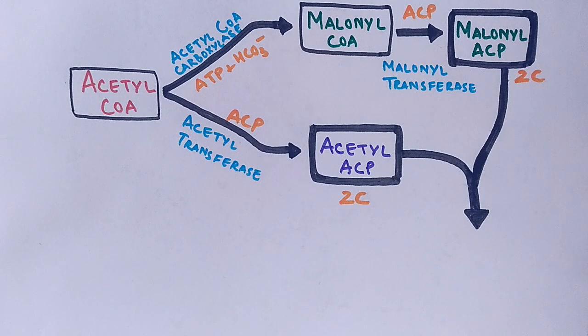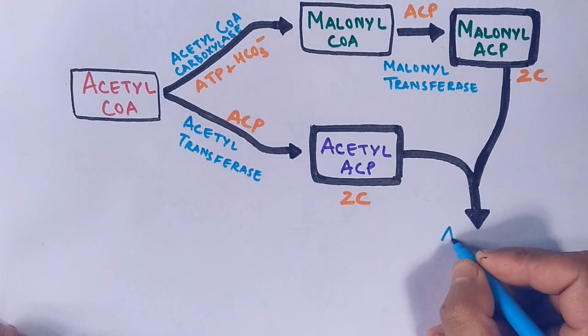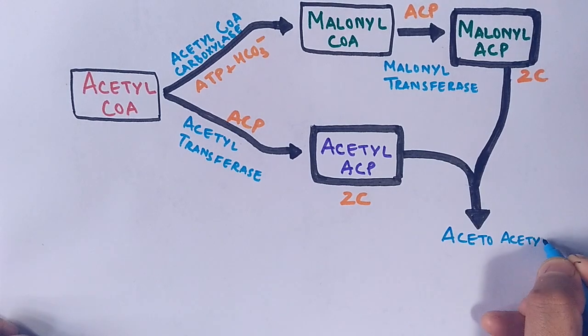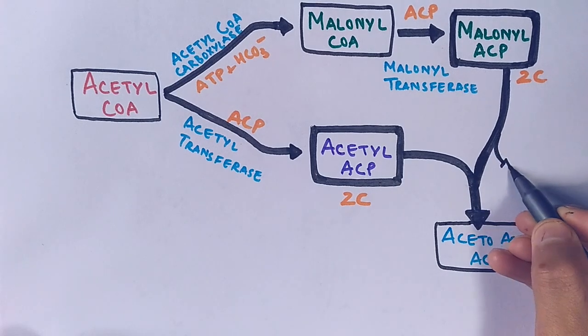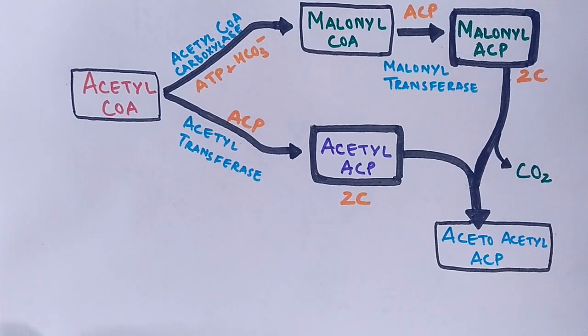And in the proceeding condensation reaction, we will get a molecule of four carbon atoms because two-carbon and two-carbon atom molecules are combining here. So in the condensation reaction we get acetoacetyl-ACP molecule, a four carbon atom molecule. And also through the condensation process, CO2 is eliminated in the reaction.